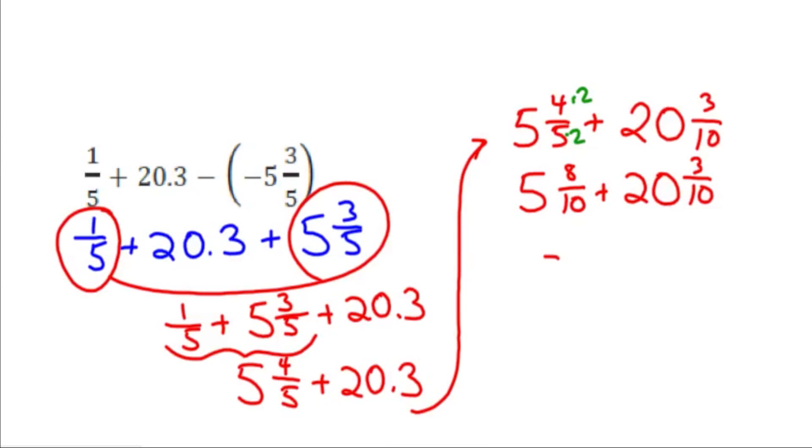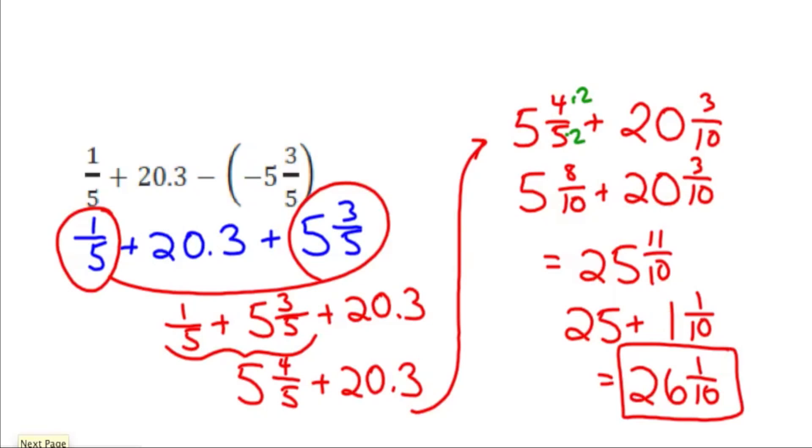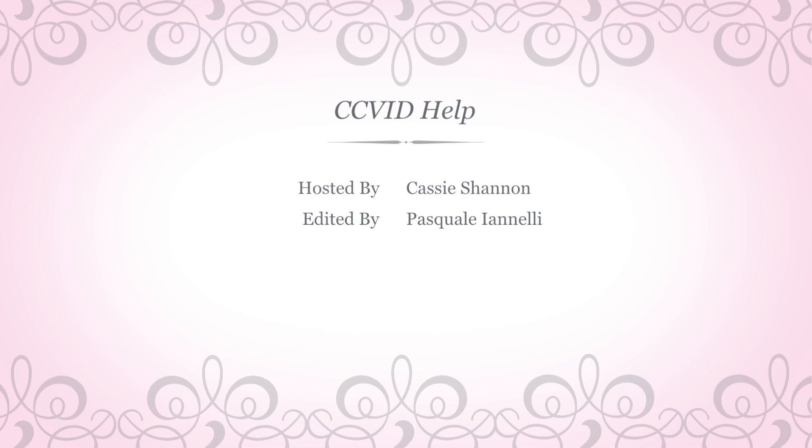We'll add the whole numbers together, we'll get 25, and we'll add the 8 tenths and the 3 tenths to be 11 tenths. But that's an improper fraction, so that's really 25 plus 1 and 1 tenth, and the final answer is 26 and 1 tenth. Had we chosen to do it as in decimal form, the answer would have been 26.1.